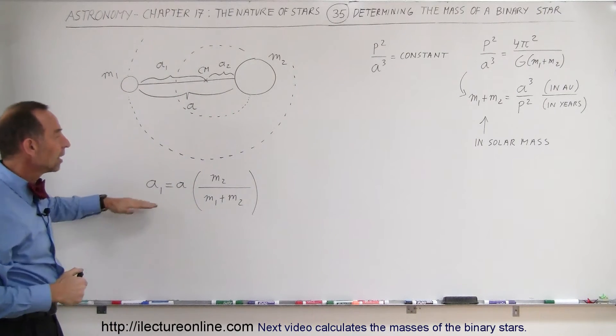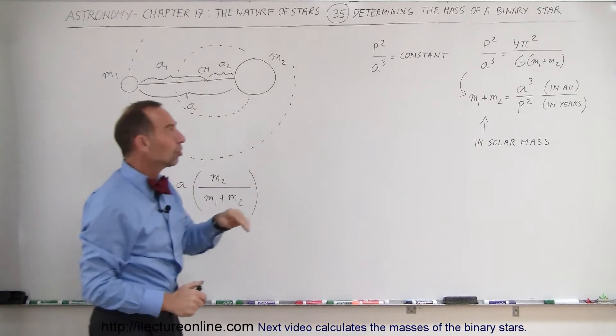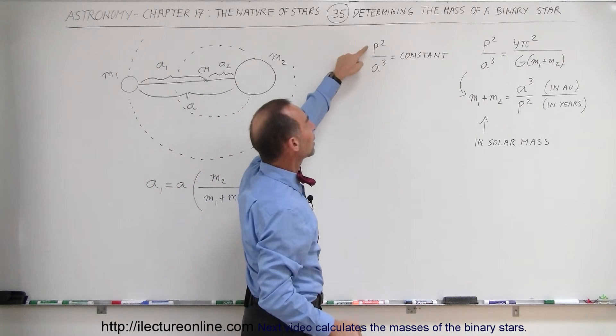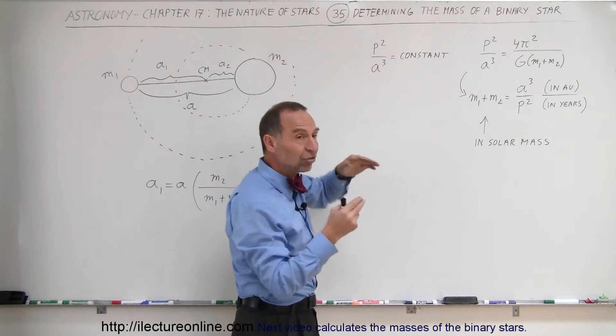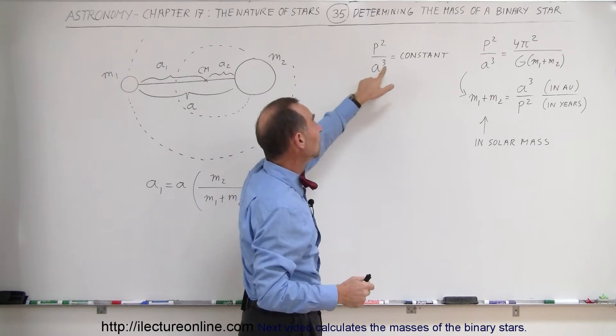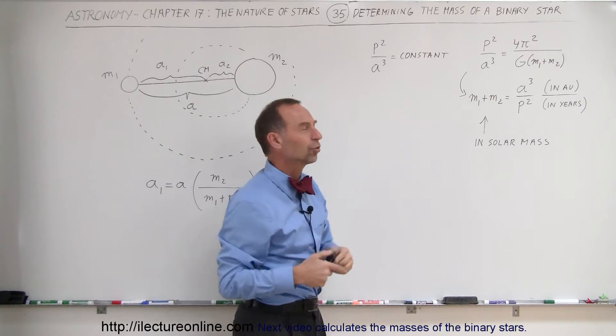Now also we can go to Kepler's third law, and we realize that the period of the orbit squared divided by the distance between the two objects cubed is equal to a constant. That was Kepler's third law.